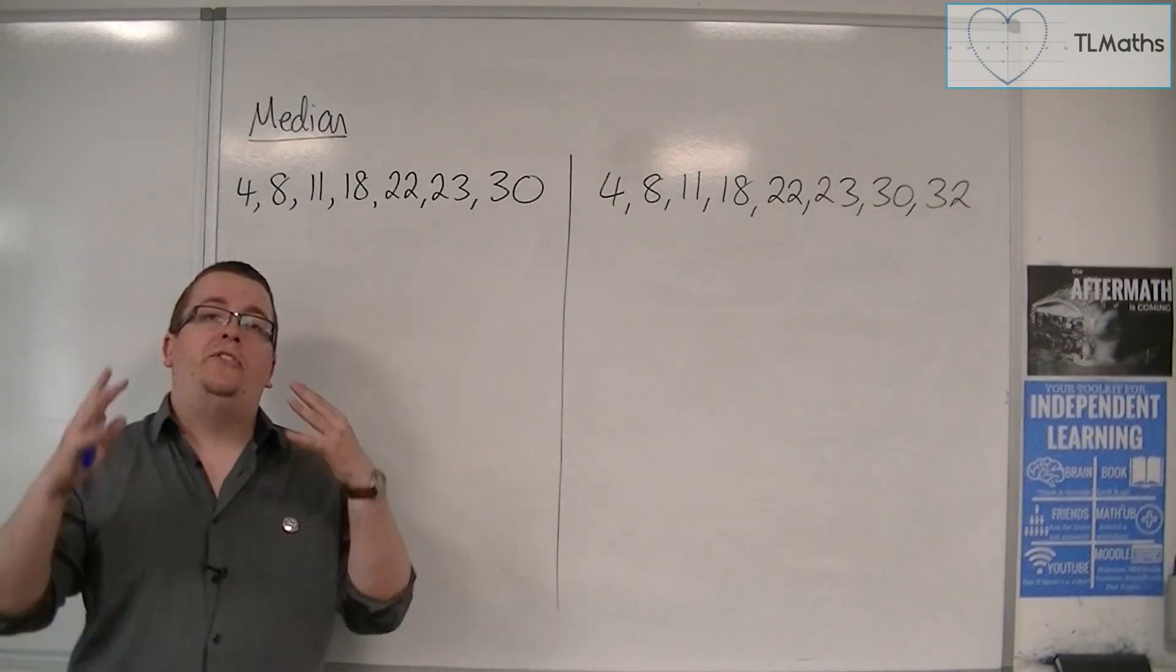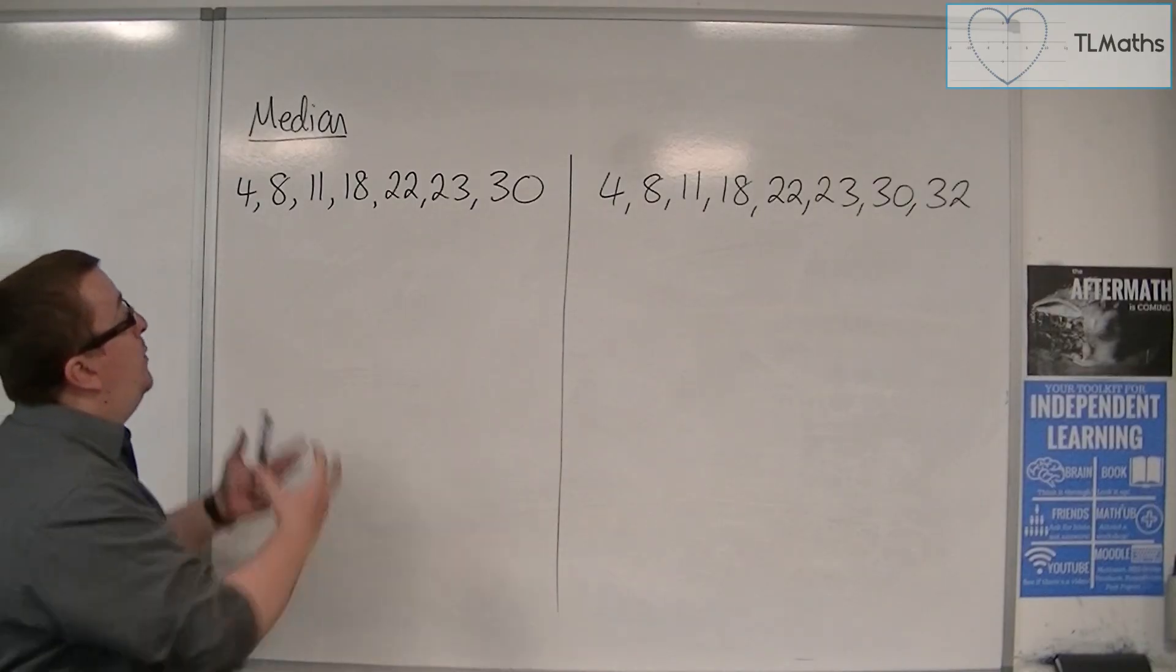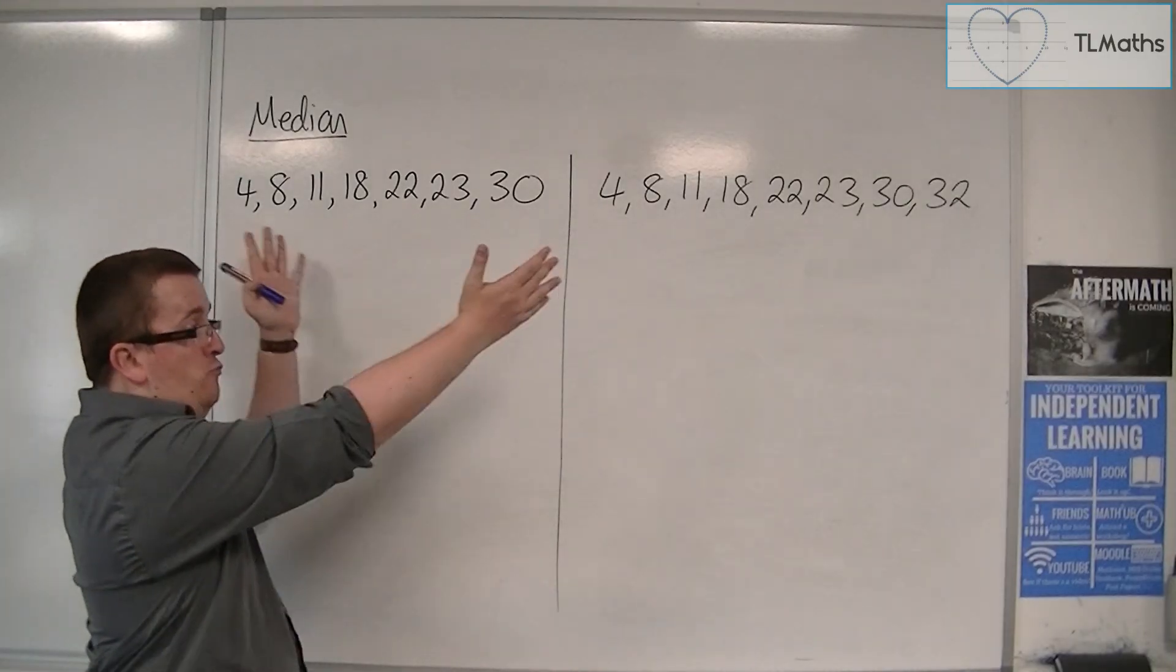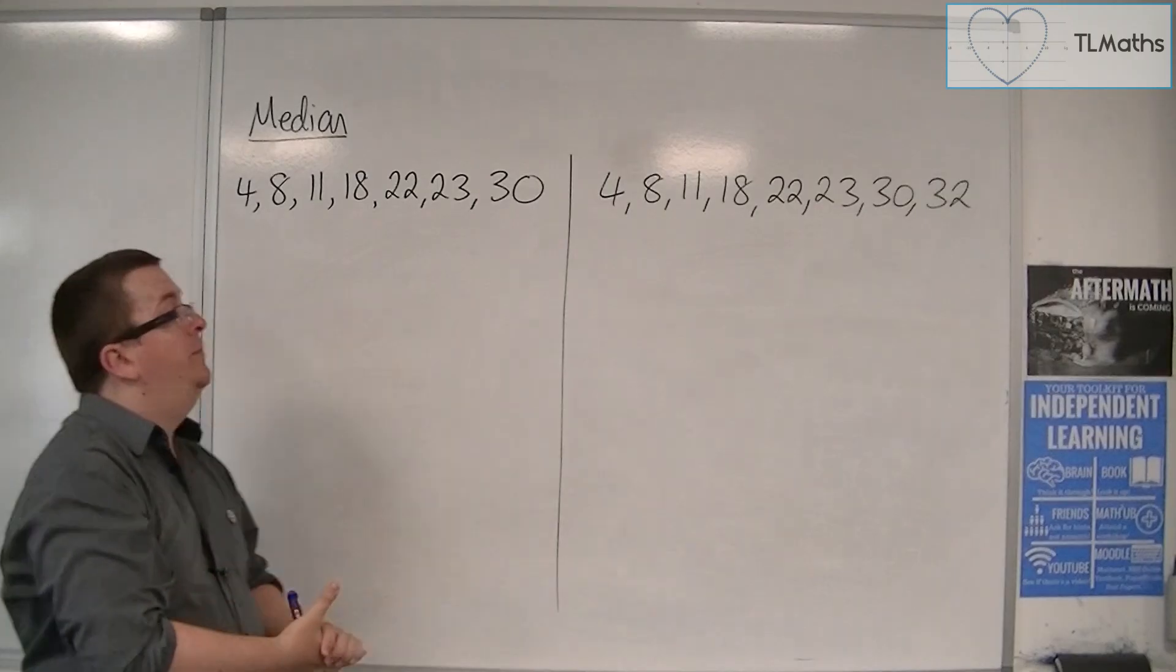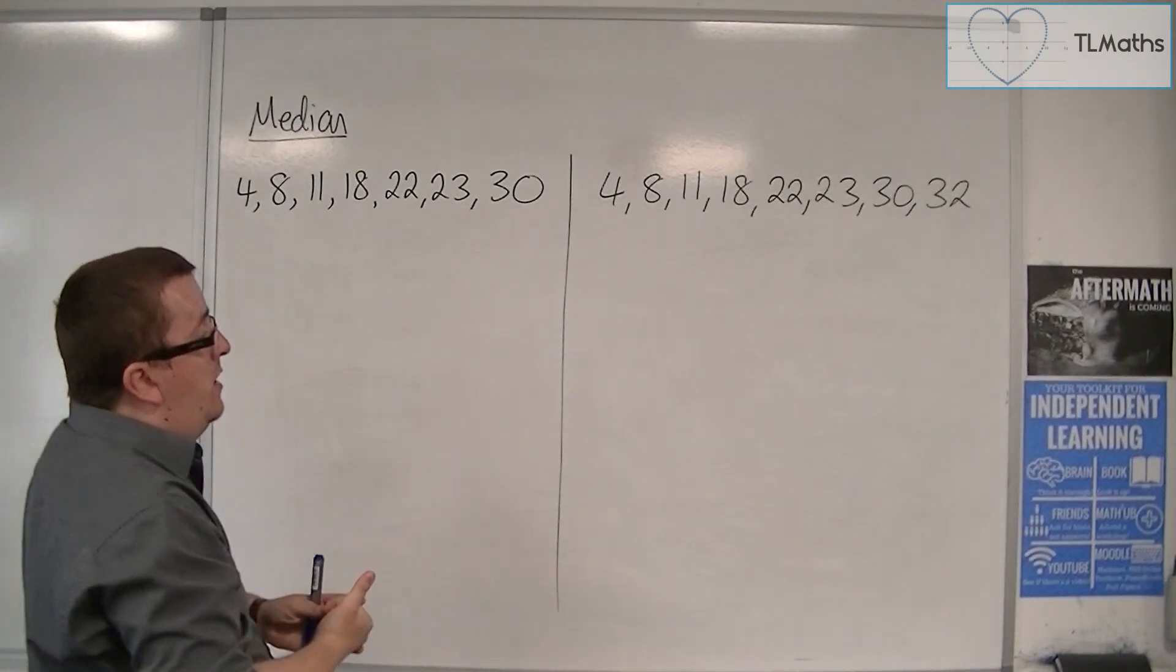Now the median represents the middle number. So in all of the cases when you calculate the median from a set of raw data like this, from just a set of numbers, what we do is we find out how many numbers there are.